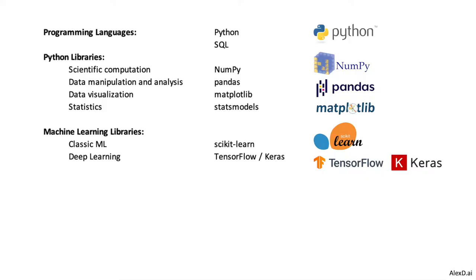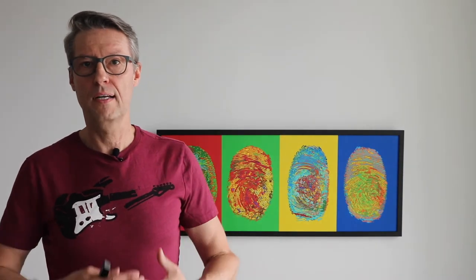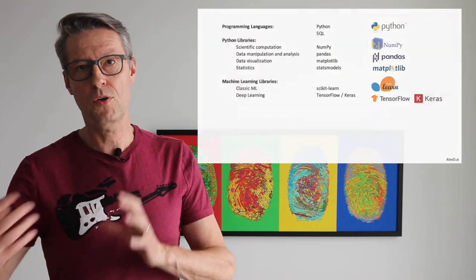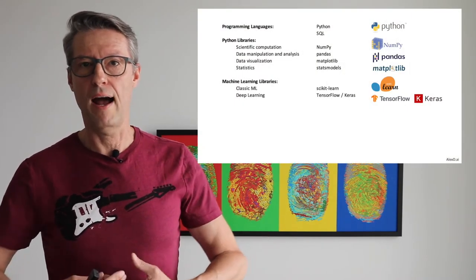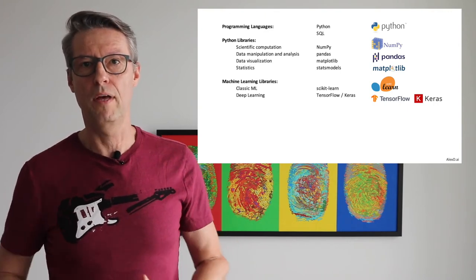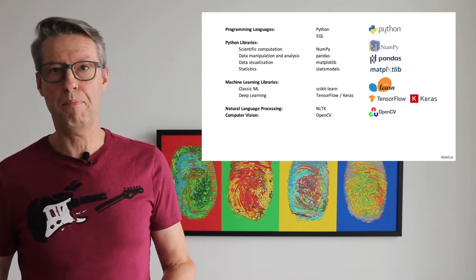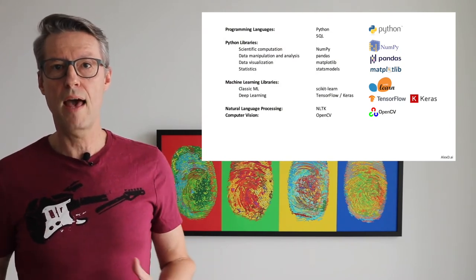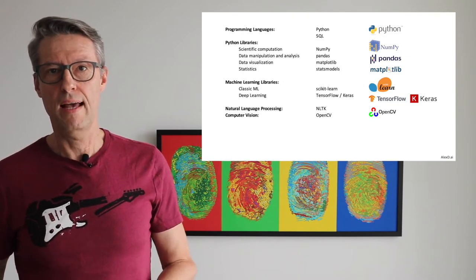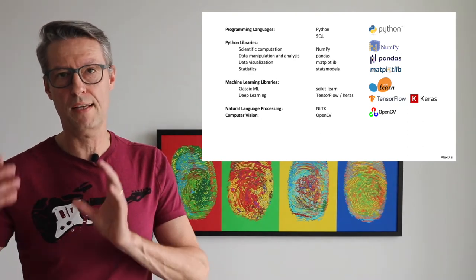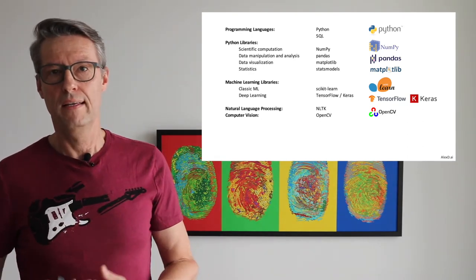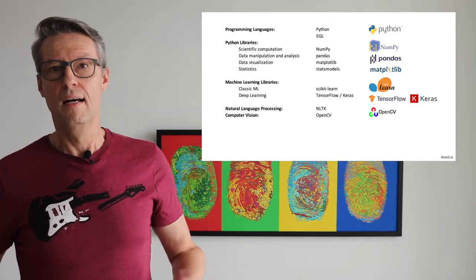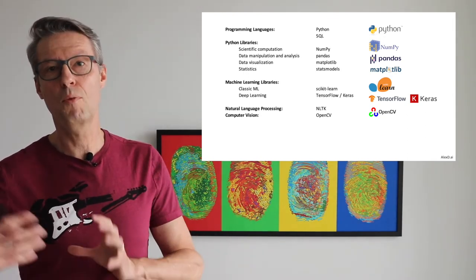If you are in the deep learning world, TensorFlow is a very popular framework to build neural networks — very deep neural networks — and also Keras. Both libraries together are very powerful to build deep neural networks. In the world of natural language processing and computer vision, there are two important libraries to help you preprocess your data before using it to build a machine learning or deep learning model. The Natural Language Toolkit (NLTK) is very good to preprocess data that is originally in text, and OpenCV is another popular library to help you in computer vision projects.